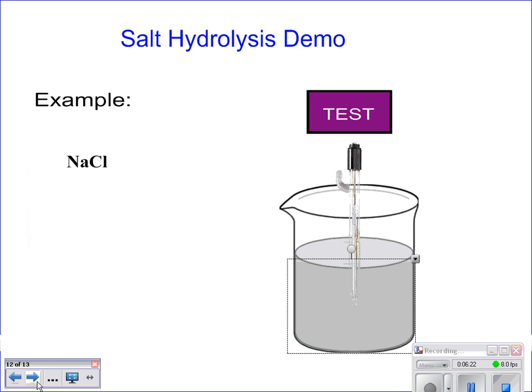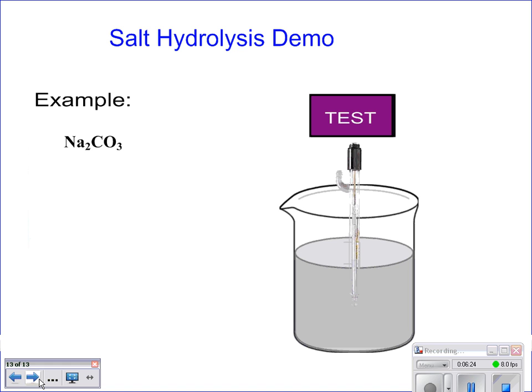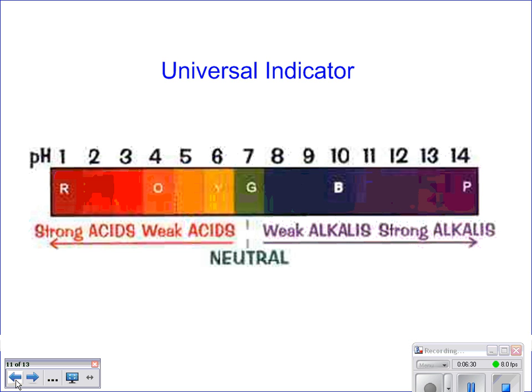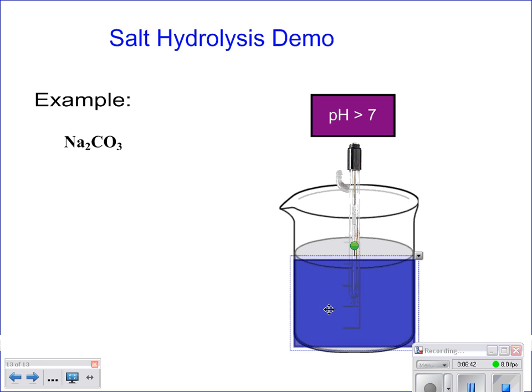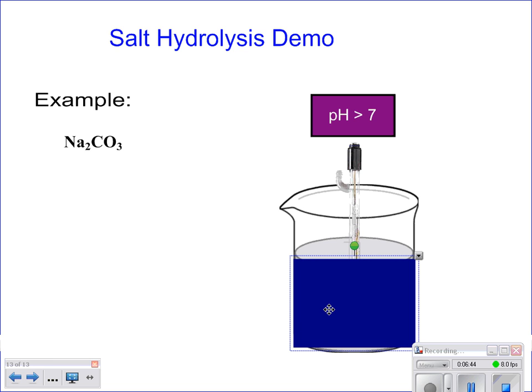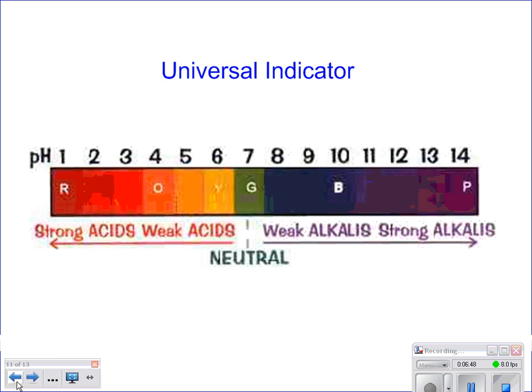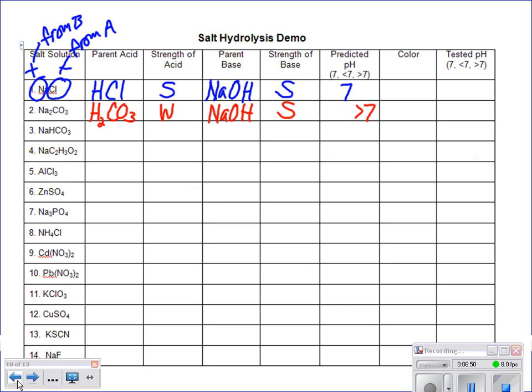We jump ahead to this next one, sodium carbonate, and we expect it to have a pH of greater than seven. According to our indicator, we're going to expect it to be in the dark blues or purplish range. So when we check it, we see, sure enough, it's greater than seven and it turns this lovely dark purplish blue color.